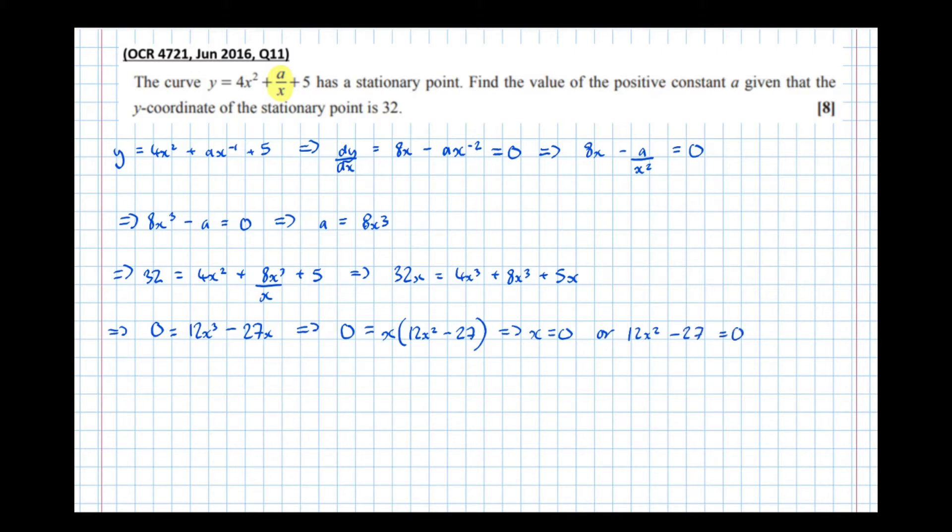So taking this 12x² - 27 = 0, that means that 12x² = 27.